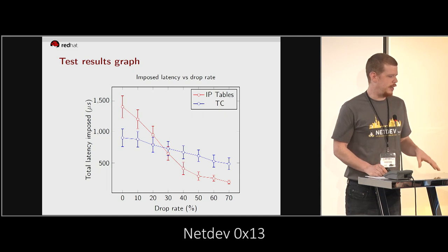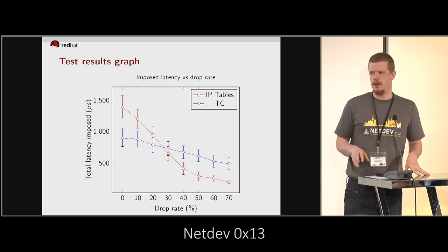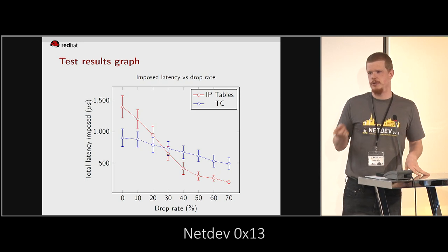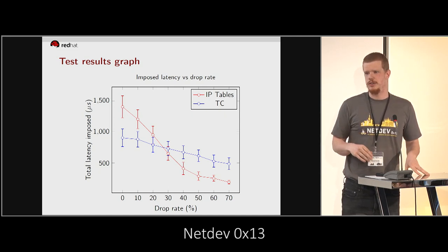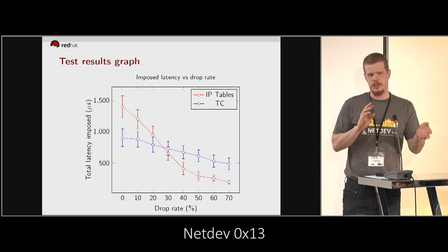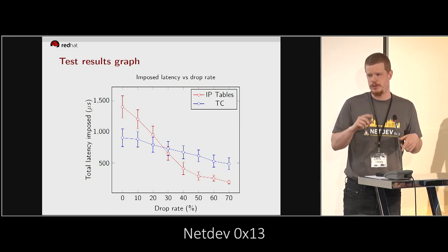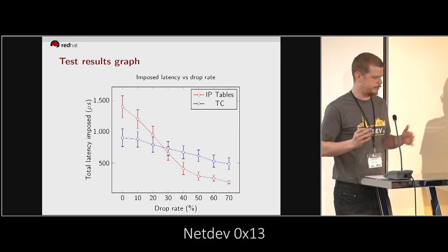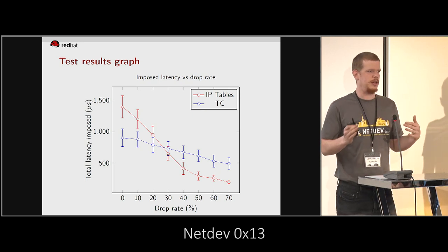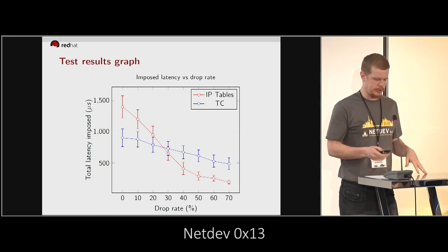One thing I forgot to mention is the test traffic itself — it's really just an HTTP request for 32K bytes and then the response. T-Rex would partition it into the sending side and receiving side and play them out the correct ports. So we could see what it would look like to have simulated real traffic.